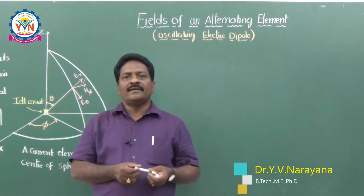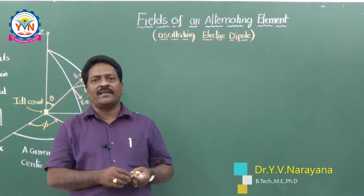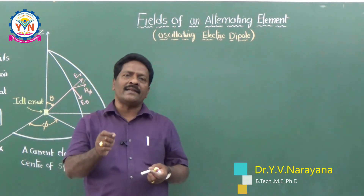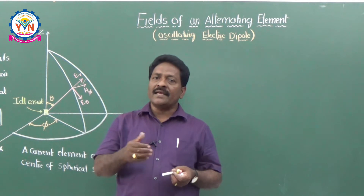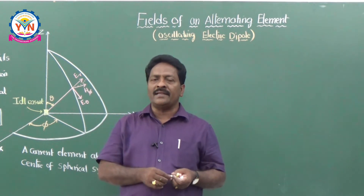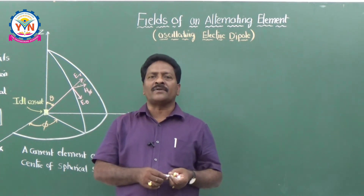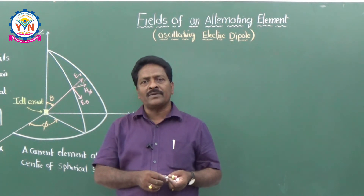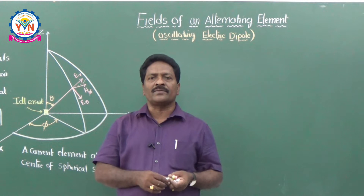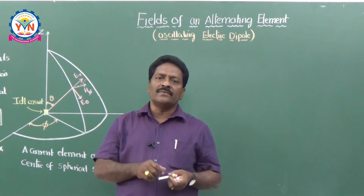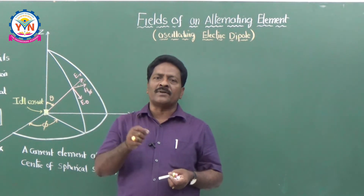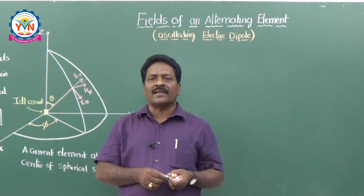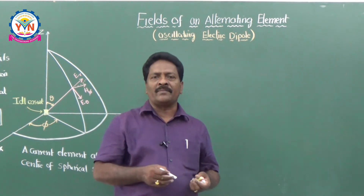Dear students, in this class we are going to see the fields of an alternating current element, which is the basic antenna element. In the last class we have seen very clearly the concept of retarded potentials using two approaches: heuristic approach and Maxwell's approach. So using the concept of the retarded potential, now let me derive the expressions of the electric fields of an alternating current element.